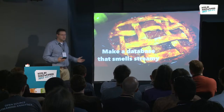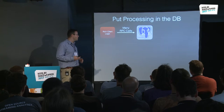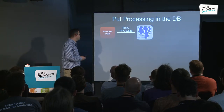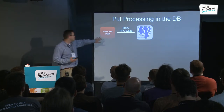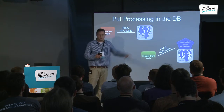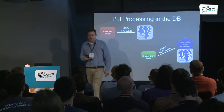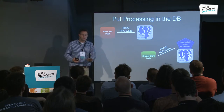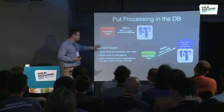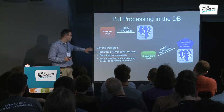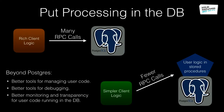This is what I'm more interested in: making a database that's a lot more streamy. One thing we can do is put processing in the database. If I put my user logic in stored procedures, I've got far fewer RPC calls and simpler client logic. Everyone says stored procedures are miserable — and that's well deserved. But we can make it better: we need better tools for managing and debugging user code in the database, better monitoring and transparency — how long does my code take, can I sample it? These are the kinds of things we can get in stream processing and also put in a database. It's a technical challenge, not a fundamental impossibility.